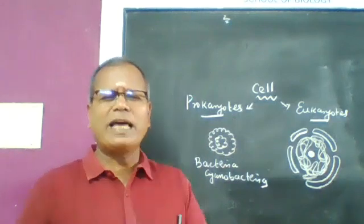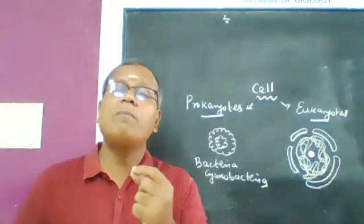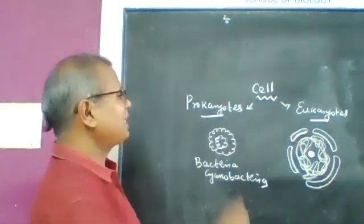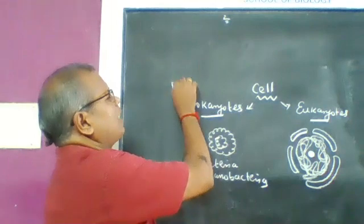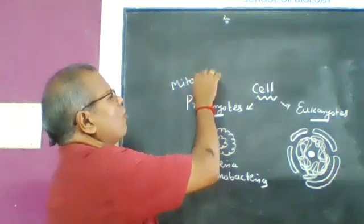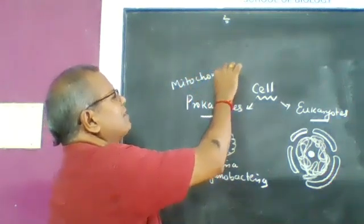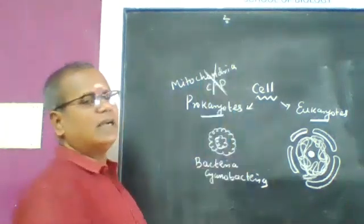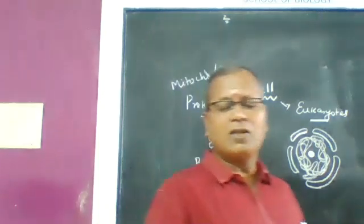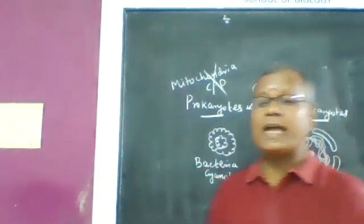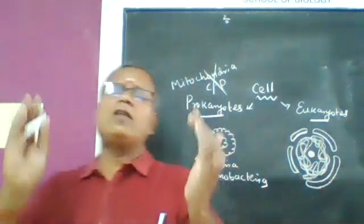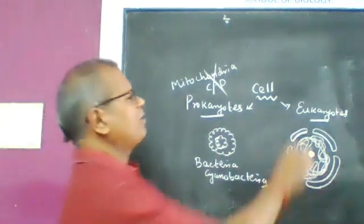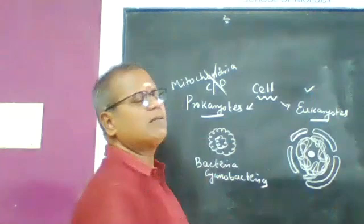In prokaryotic organisms, double membrane cell organelles — such as mitochondria and chloroplasts — are totally absent. In eukaryotic organisms, double membrane cell organelles are present.